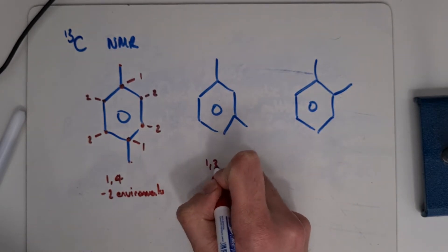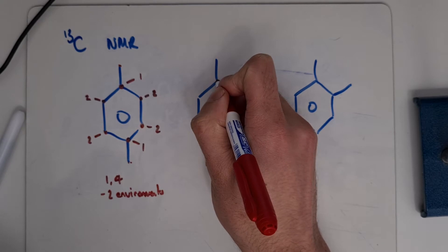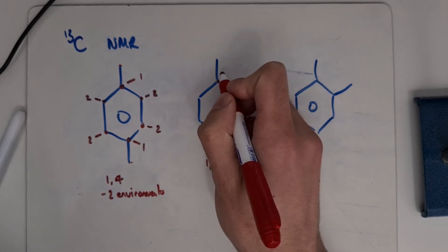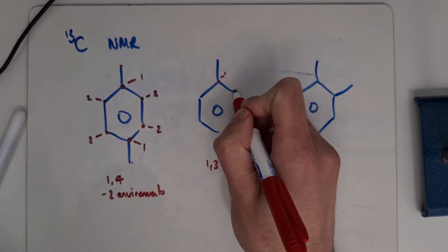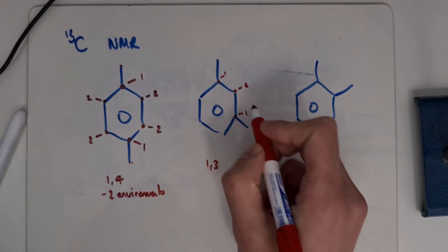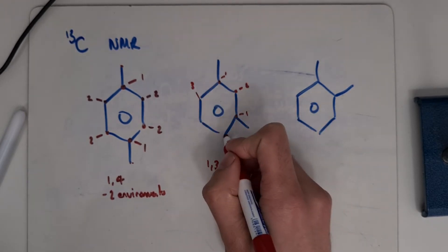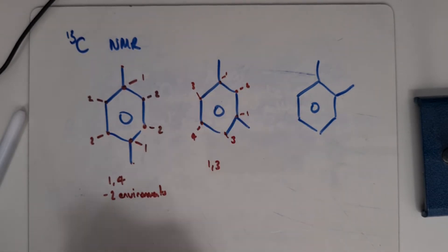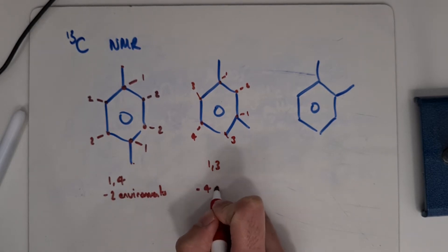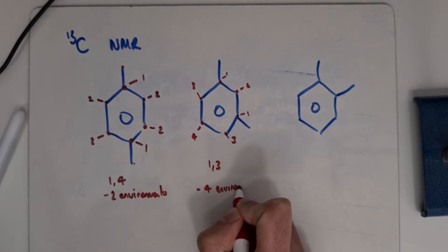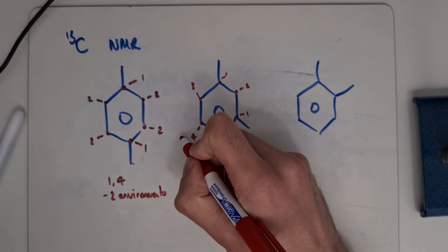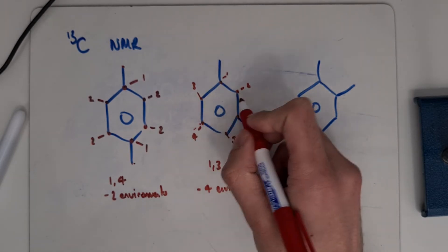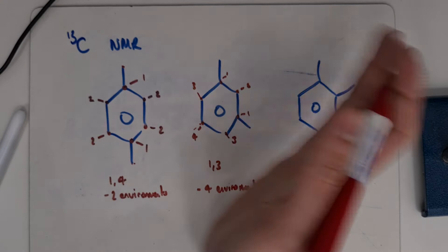If we look at 1,3, these environments are going to be identical — we'll call those environment 1 and 1. This central carbon is going to be unique; there's nothing similar to it. These two environments are the same, and then we've got a fourth environment. So in 1,3 we'll get four environments. There's a mirror plane going straight down the centre from position 4 to 2, so these are identical on either side.